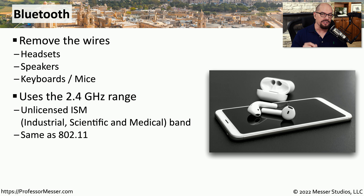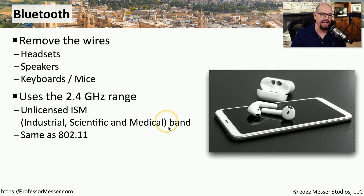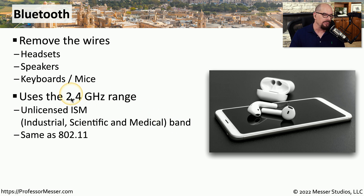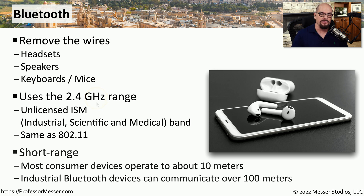Bluetooth also uses the 2.4 gigahertz band — specifically the unlicensed ISM part of the band, which stands for Industrial, Scientific, and Medical. This is an area of the 2.4 gigahertz band that doesn't require any special licensing from the government. Anyone can use these particular frequencies, which is why Bluetooth and 802.11 both commonly use the 2.4 gigahertz band. Bluetooth devices generally only communicate in a small area around you, which is why we often refer to this as a personal area network.